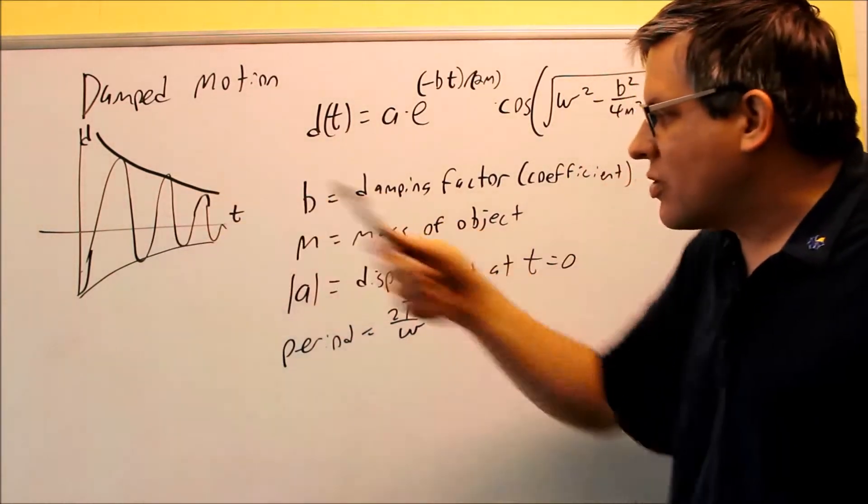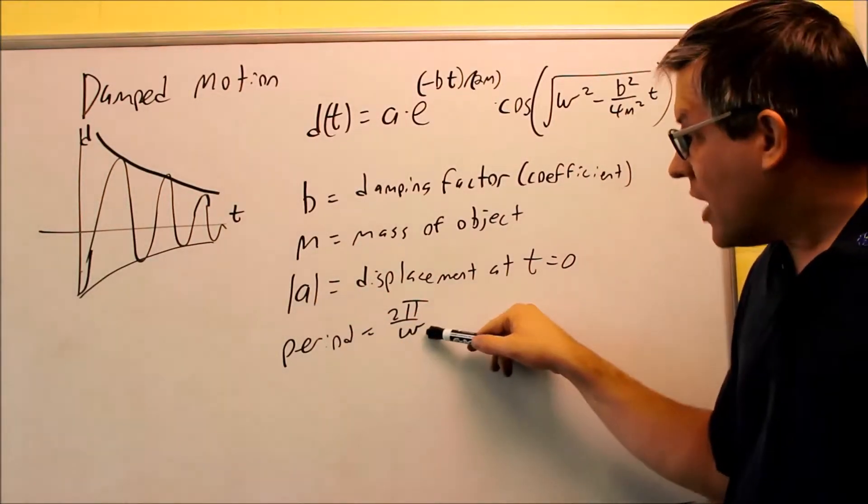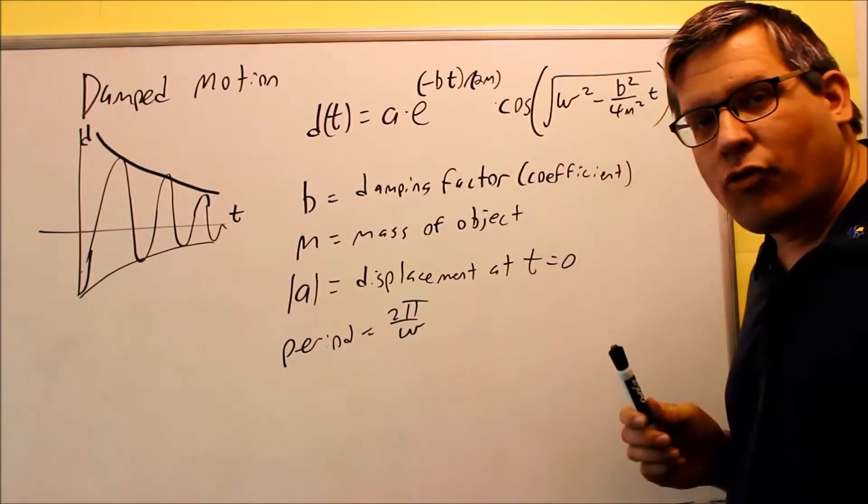Eventually it will oscillate back and forth and settle back down. Here's your period. That's the same formula that you should recognize from before. That omega here, we see the omega actually in our formula.